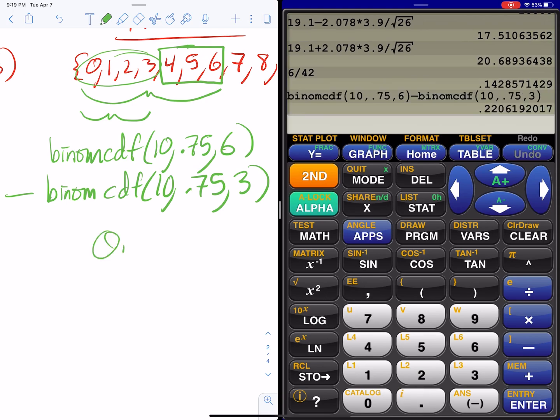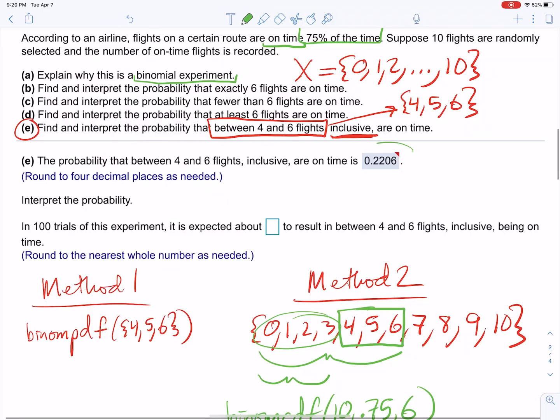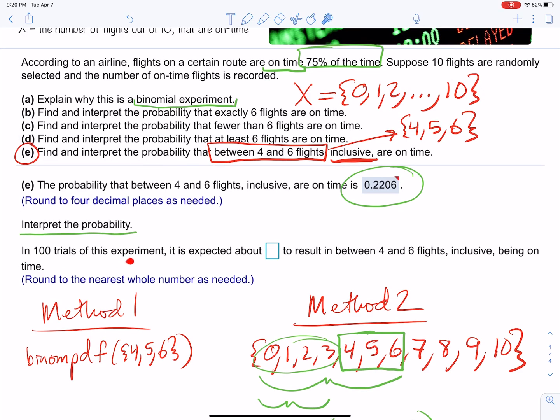And there we have it: 0.221. That's the probability, and that's the answer that they got. So now let's interpret the probability.